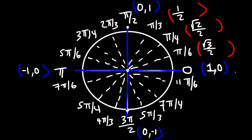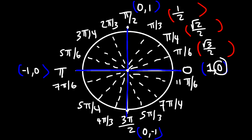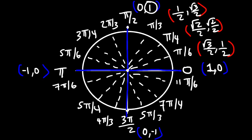For the y-values, we increase from 0 to 1 going upward. After 0, it's √1/2, then √2/2, then √3/2, and √4/2 equals 1. That's a quick and simple way to find out what the coordinate values are in Quadrant 1.